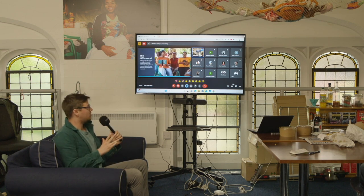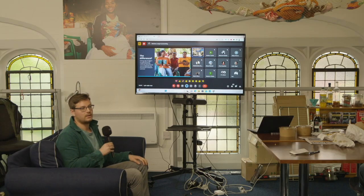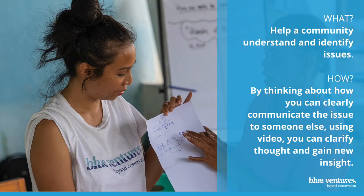How does participatory video differ? It may or may not have any of those elements, but the primary difference and defining value of participatory video — often shortened to PV — is that it aims to pass full editorial and creative control to the community group, who are often the subjects of the film. We want to give them the means to determine how they and their stories are expressed. Ultimately, the value of PV is giving as much control as possible to the subjects.